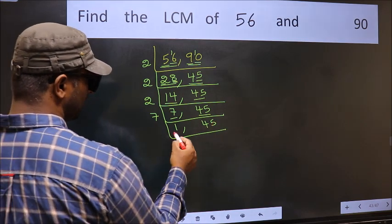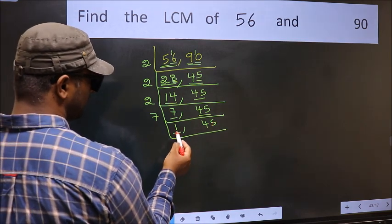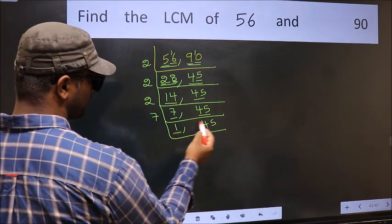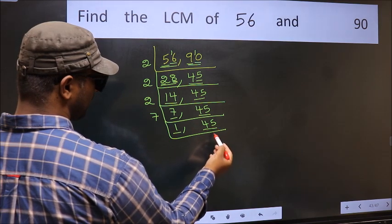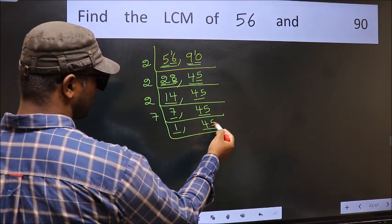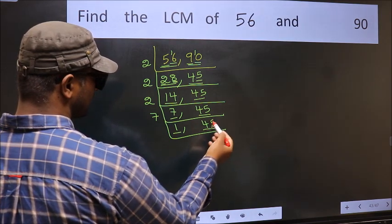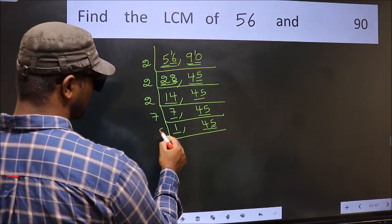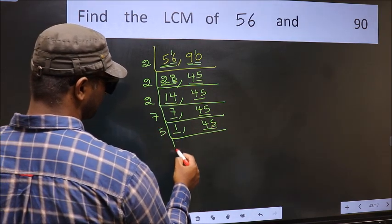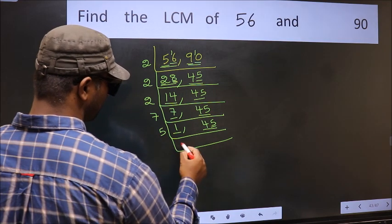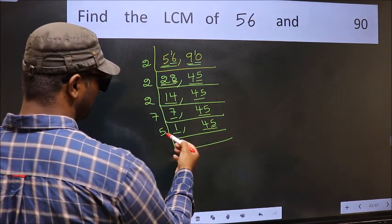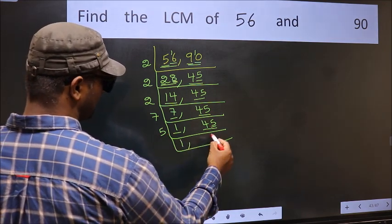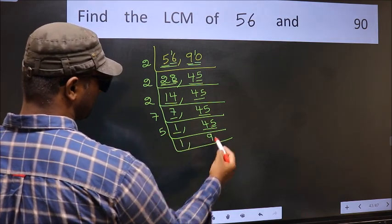Now we got 1 here, so focus on the other number 45. The last digit is 5, so take 5. When do we get 45 in the 5 table? 5 nines are 45.